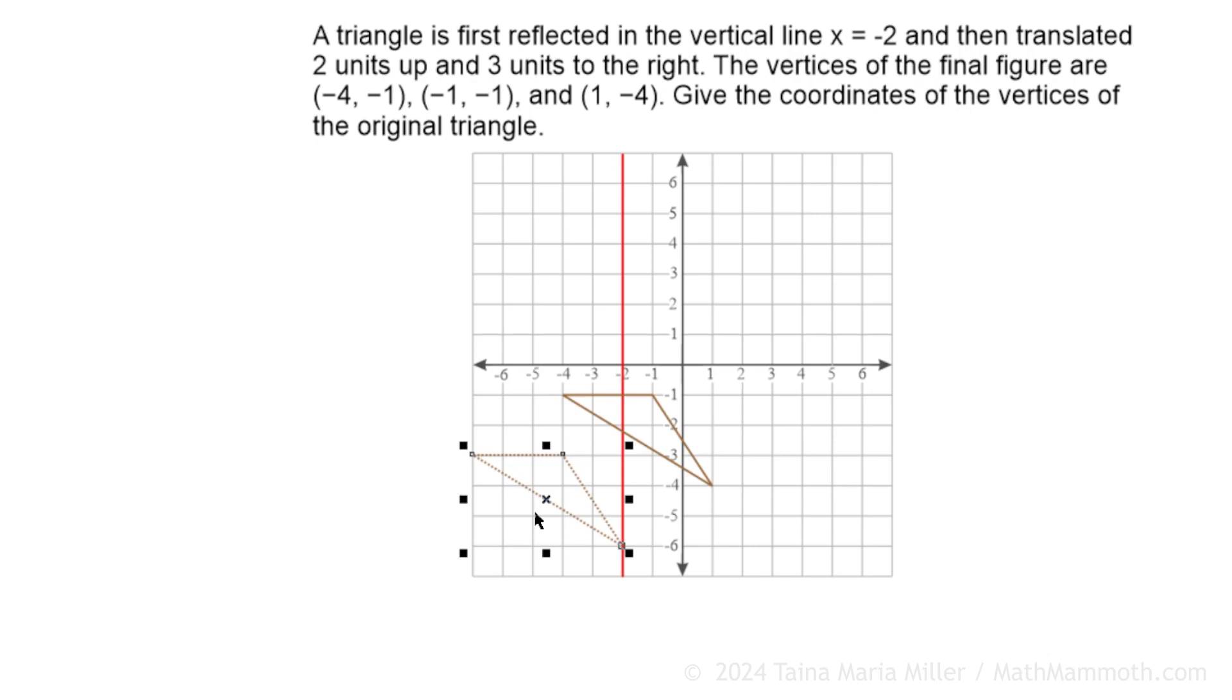And then there was a reflection in the vertical line. So that goes like this. Okay, that is the original triangle. And now we can look at the coordinates. We have one point here, negative 2, negative 6. Here's 3, negative 3, and then 0, negative 3. Here's our answer triangle in purple. And these are the coordinates of the original triangle. I hope this was helpful.